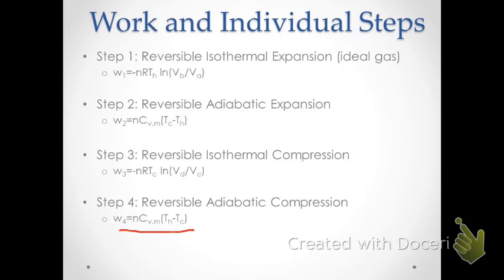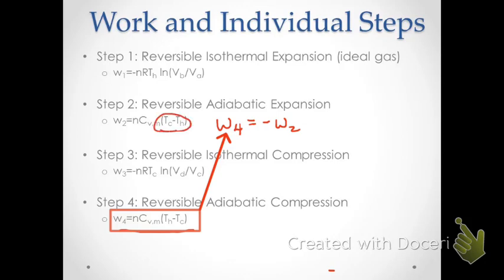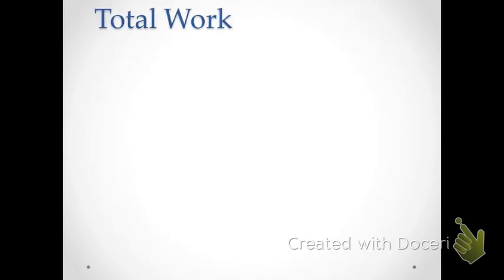Comparing steps two and four, they have the same magnitude with opposite sign — step two is T_C minus T_H and step four is T_H minus T_C — so these two steps cancel each other out. Therefore, the total work in our system is just the sum of the work from step one and step three.